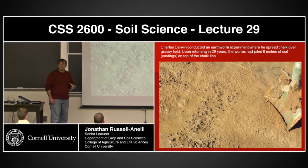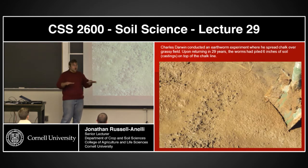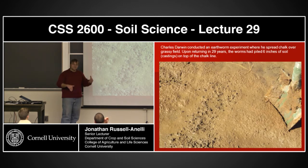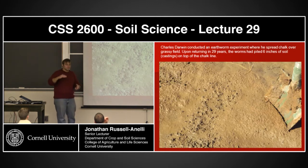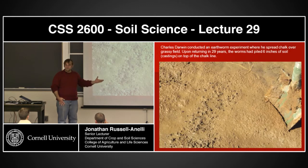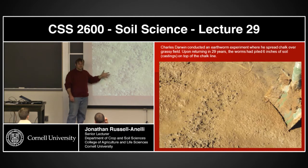Charles Darwin was very interested in earthworms. He did an experiment where he spread chalk over his backyard, then went away and came back 29 years later and dug into the soil to find where that chalk line was. The chalk line was 6 inches underground — 6 inches below the surface. He had spread the chalk at the surface. What had happened? This is all earthworm casts. In 30 years he had developed 6 inches of earthworm casts. That's where the chalk line went.